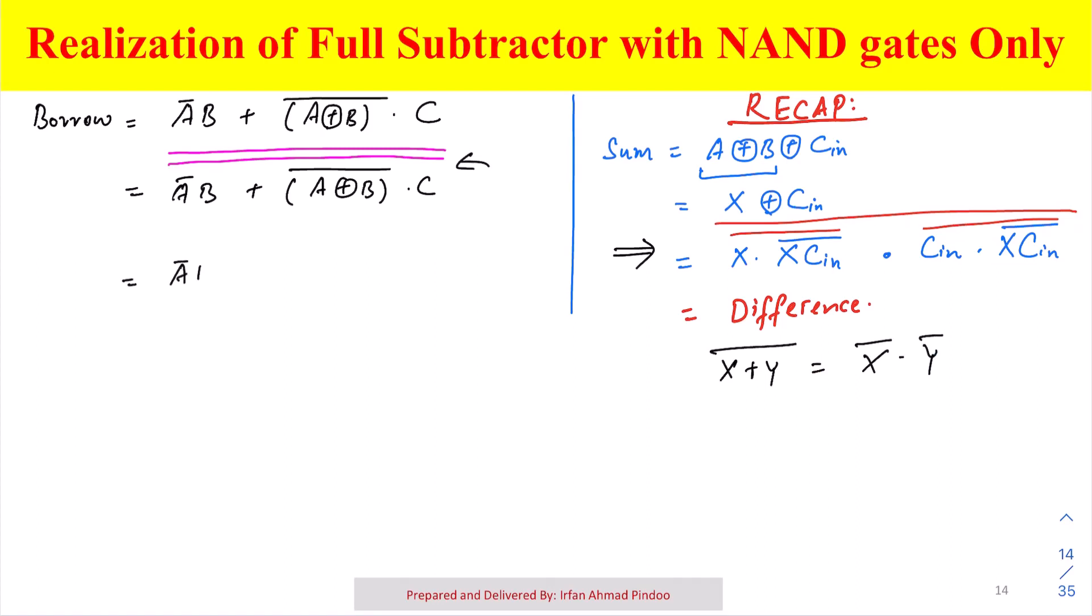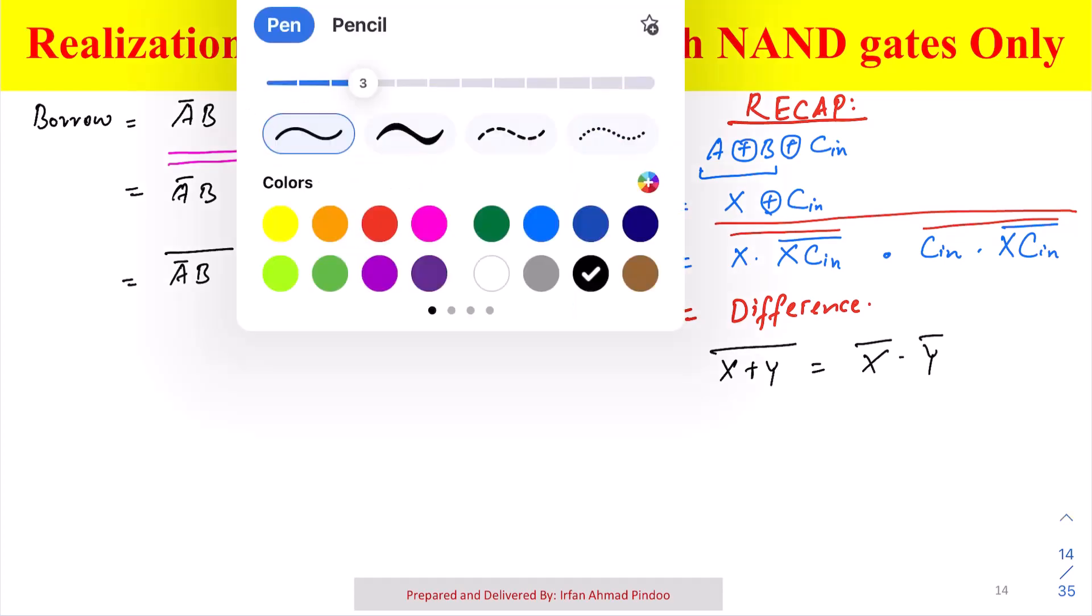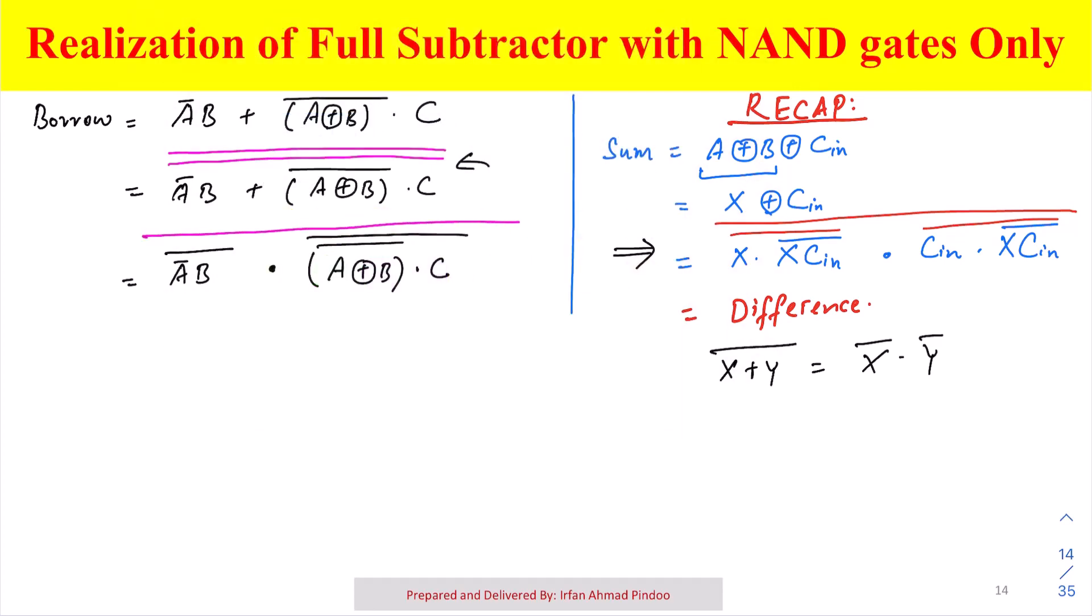So we can write it as A bar into B bar dot A XOR B bar dot C, and then there is a bar here and the overall bar.